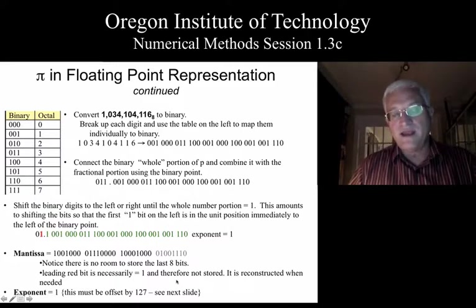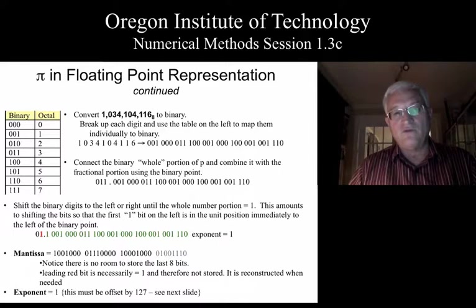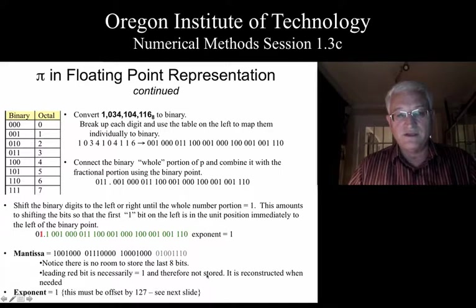Now, when we pull that number back out and convert it back to decimal, you're not going to get that full pi value that we tried to stick in there. You'll only get 7 significant digits.